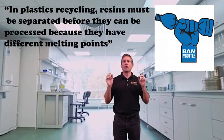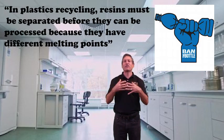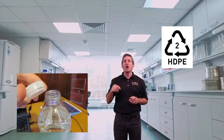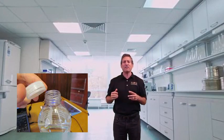You see, as the website Ban the Bottle reminds us, quote, in plastics recycling, resins must be separated before they can be processed because they have different melting points. So caps and rings are removed. The bottle is PET, or plastic number one, based on resin codes. The ring, high-density polyethylene, HDPE, plastic number two, while the cap is typically made of polypropylene, PP, plastic number five. They must be separated, but that takes labor.